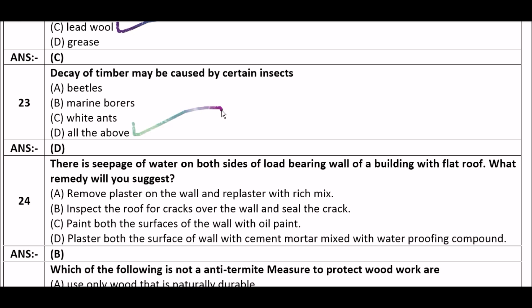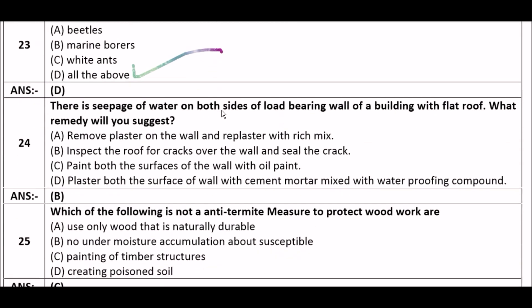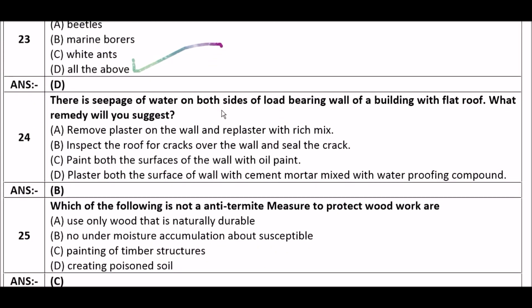Decay of timber may be caused by certain insects — for example, beetles, marine borers, and white ants. Next question: There is seepage of water on both sides of a load-bearing wall of a building with a flat roof. What remedy will you suggest?